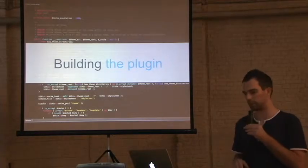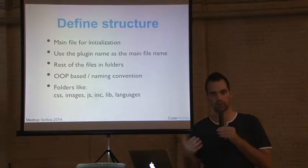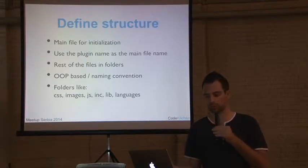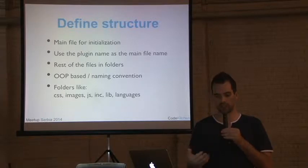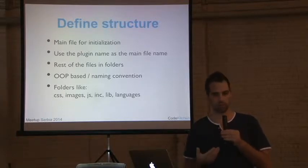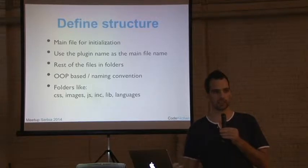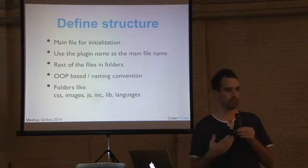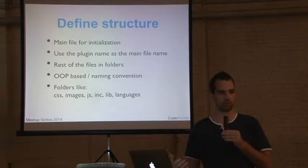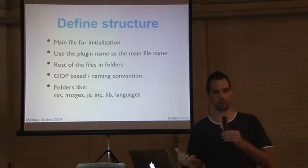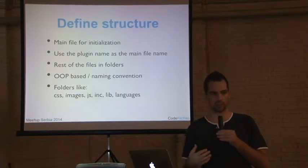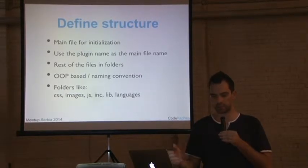When you build the plugin, define the structure. What does the main file do? In my case the main file is almost always empty. Use the plugin name as the main filename, because that's how all plugins do it — if you don't, things can break. Put most files in folders. I only have folders and the main plugin file in the root directory. I always structure it as object-oriented programming, which at minimum protects you through prefixing things.